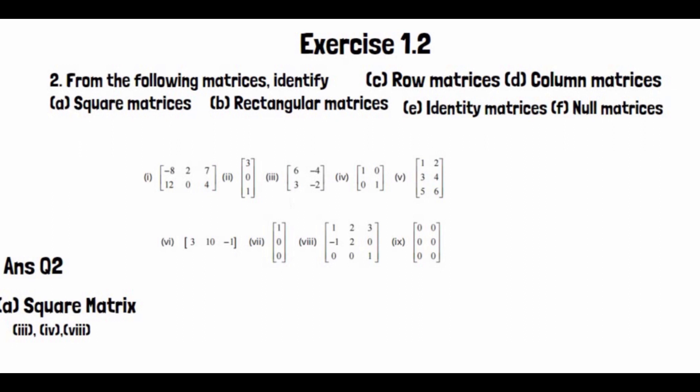Part number 4 also falls into two categories — it is also a unity matrix because it has ones on the diagonal. So we will write it in that category as well when its turn comes.